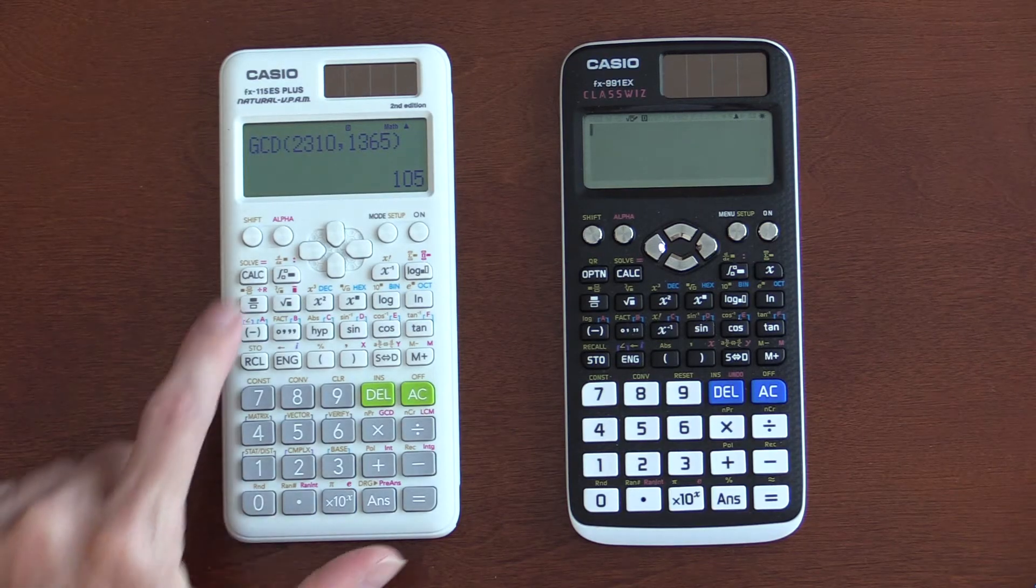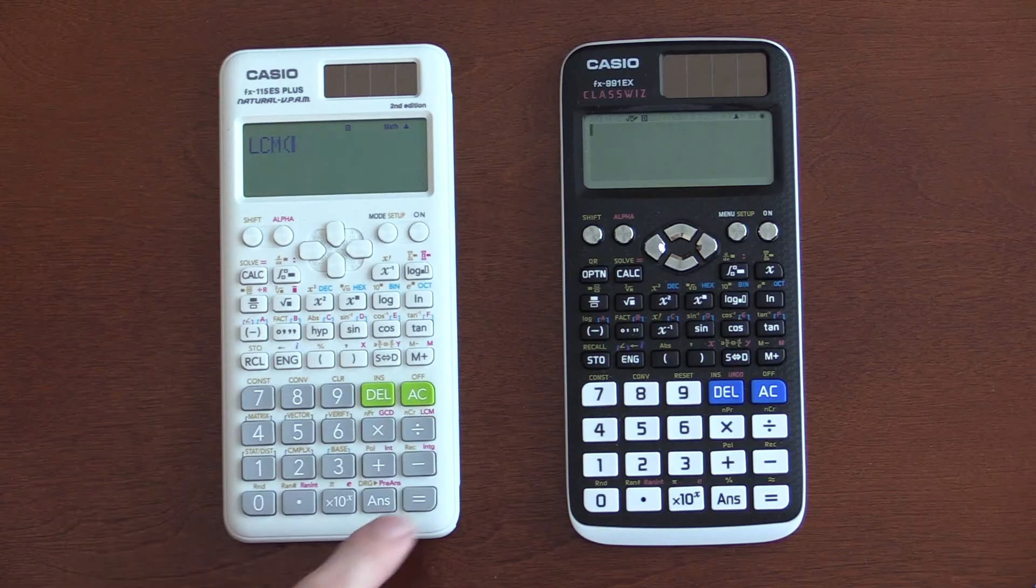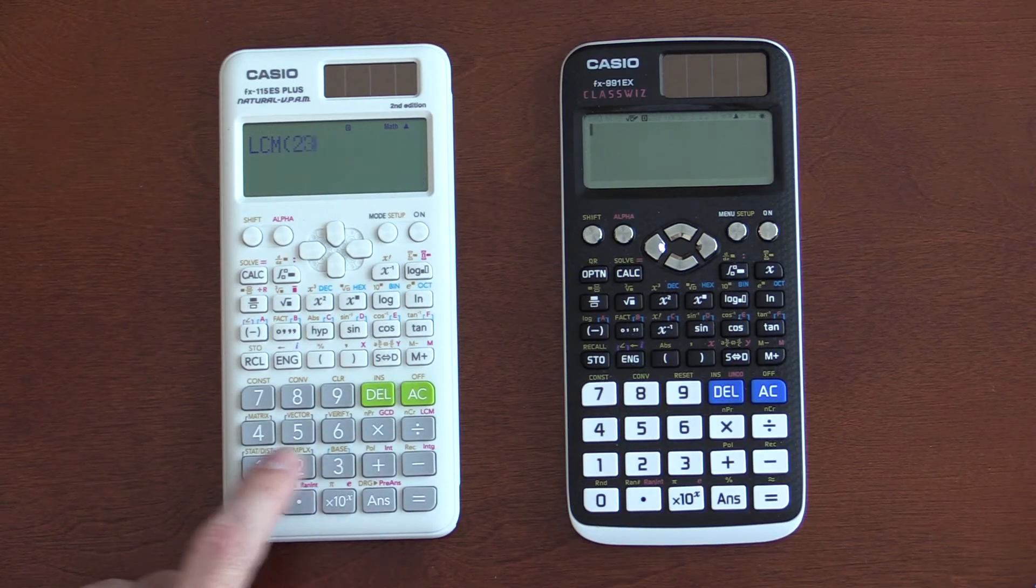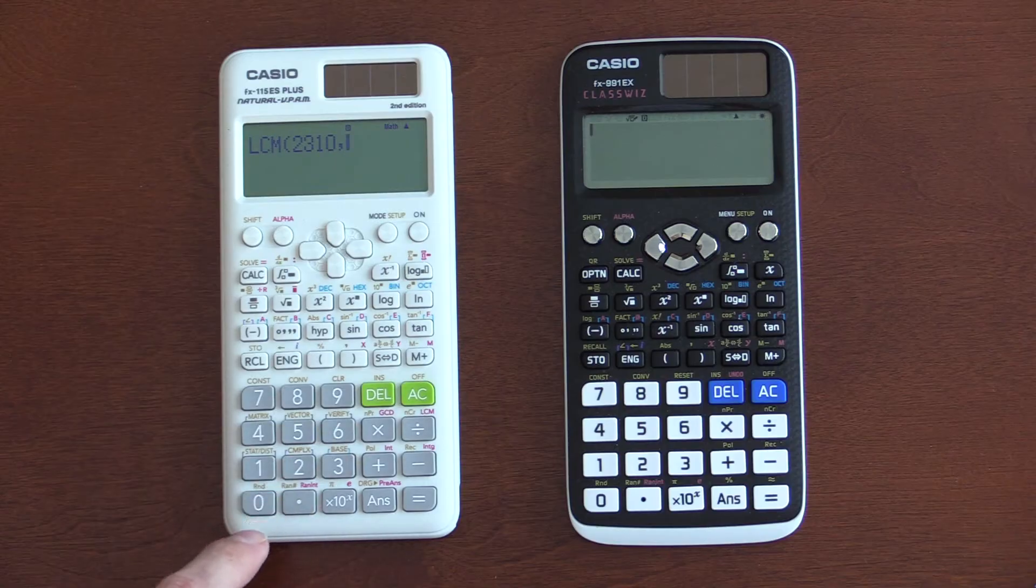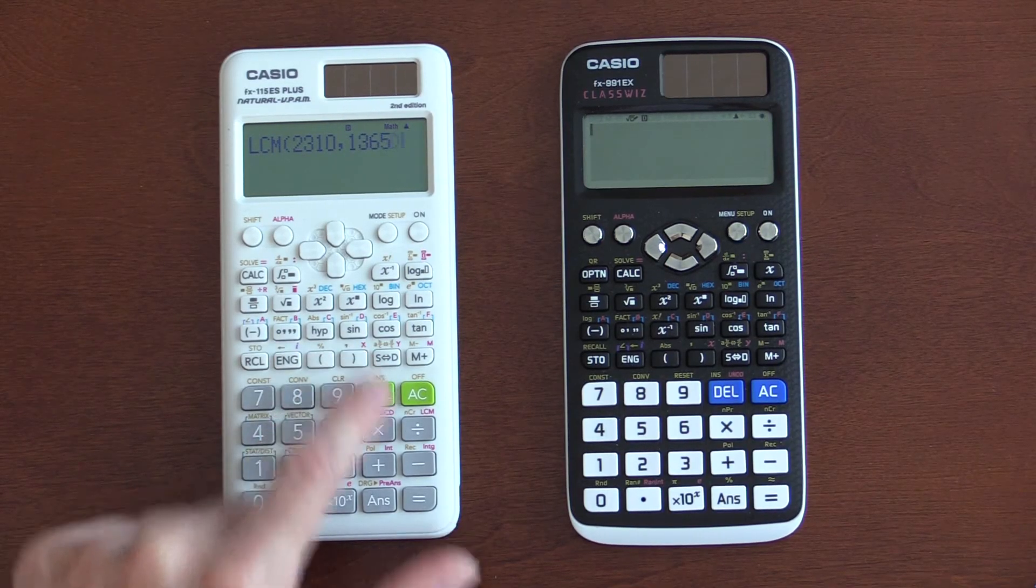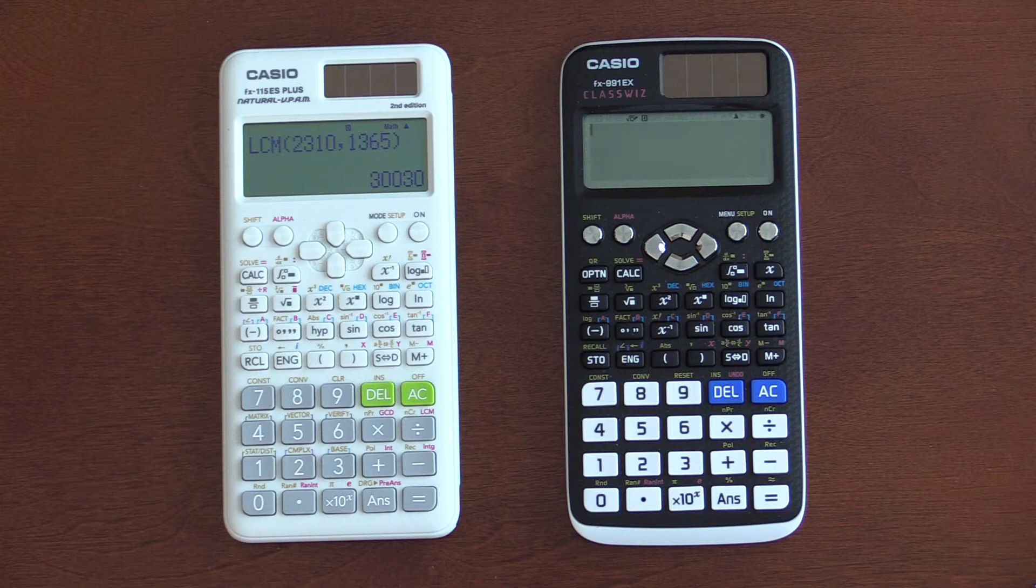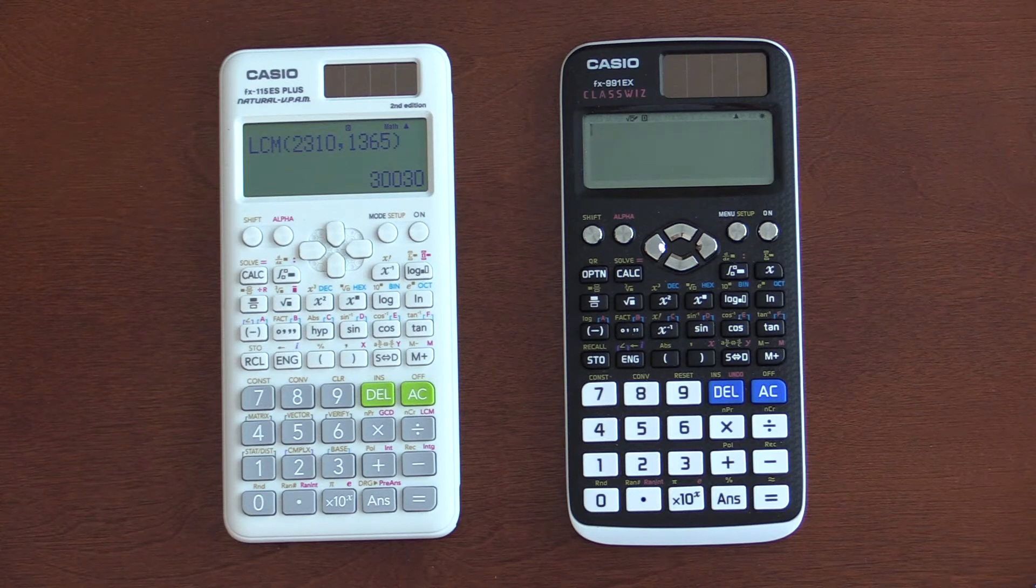And, it also has least common multiple. If we do least common multiple of those same two numbers. And, 30,030.